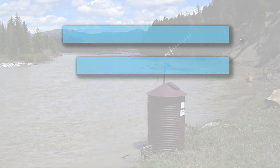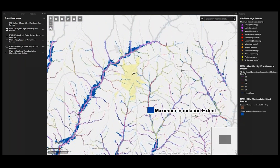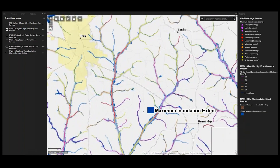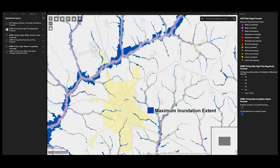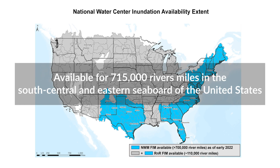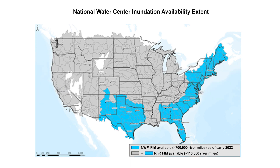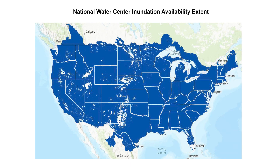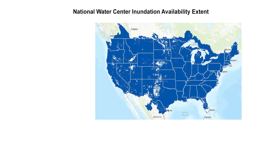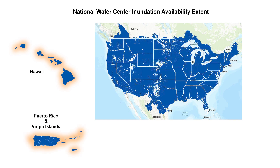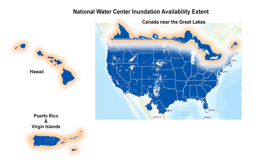There are a few key features worth noting when using FEM derived from NWM flow forecasts. First, as of late 2021, NWM FEM was available for 715,000 river miles in the south central and eastern seaboard of the United States. As of 2022, NWM FEM is generated for roughly 3.4 million river miles throughout the United States, including Hawaii, Puerto Rico, the Virgin Islands, small portions of southern Canada, and a small portion of Mexico near the Rio Grande.